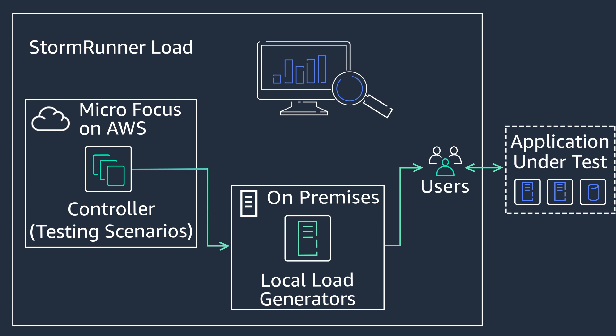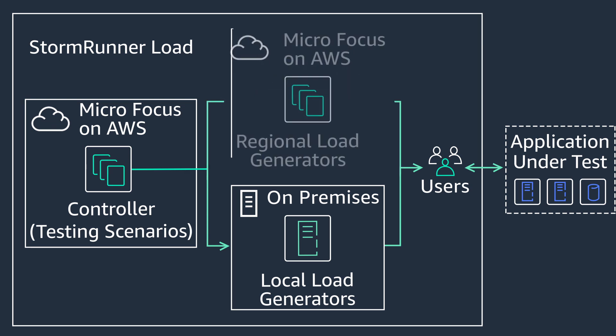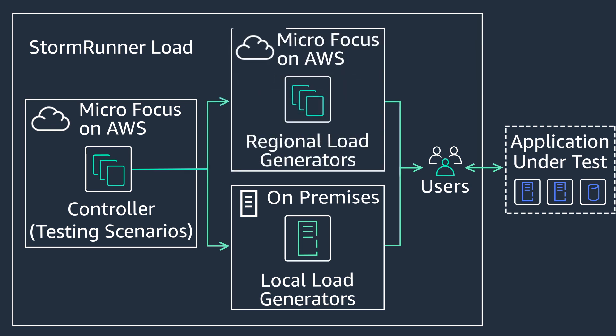StormRunner Load on Amazon Web Services, or AWS, helps with its ability to quickly spin up load generators in multiple geographical regions to simulate user capacity, and interpret and compare results measured against a previous version of the application.